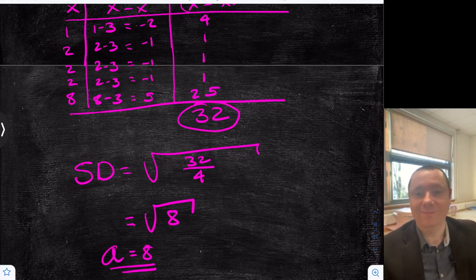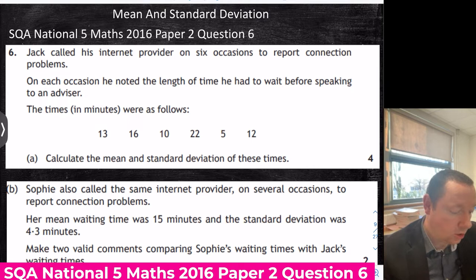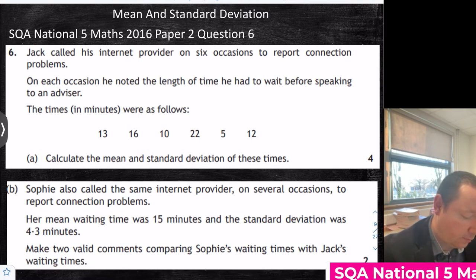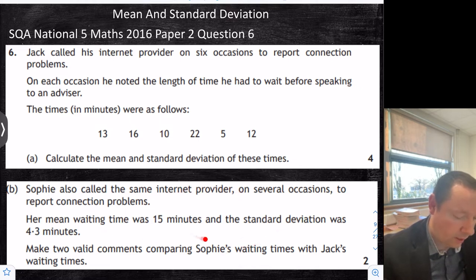Now a mean and standard deviation question. SQA National 5 Maths 2016 Paper 2 Question 6. Jack called his internet provider on 6 different occasions to report a connection problem. On each occasion he noted the length of time he had to wait. Calculate the mean and standard deviation of these times. And then there's a comparison question which we'll get to in a moment.